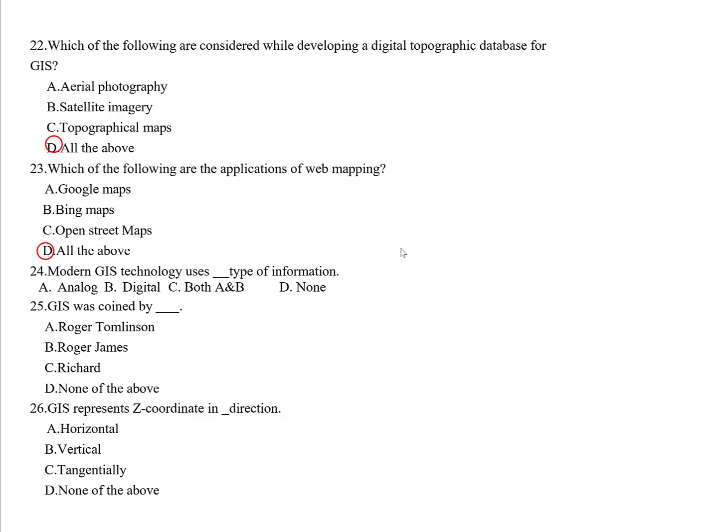Question twenty-four: Modern GIS technology uses which type of information — analog, digital, both, or neither? The correct answer is digital. Modern GIS technology uses digital type of information.